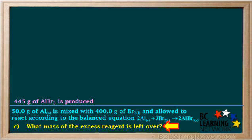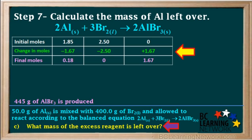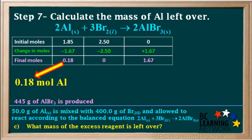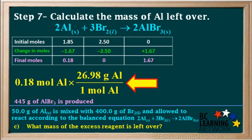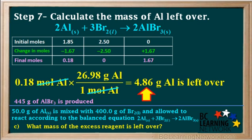The third part of the question asks for the mass of the excess reagent left over after the reaction. From the ICF table, 0.18 moles of aluminum remain unreacted. We multiply 0.18 moles of aluminum by the atomic mass of aluminum, 26.98 grams per mole, and canceling out the moles gives us 4.86 grams of aluminum left over.